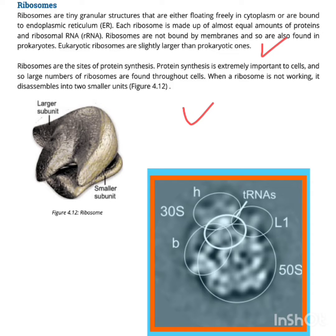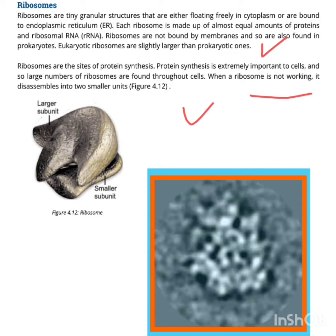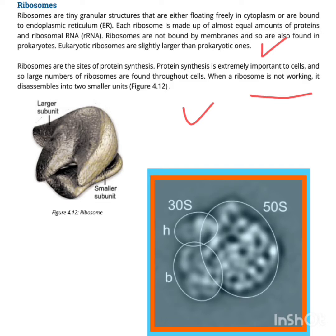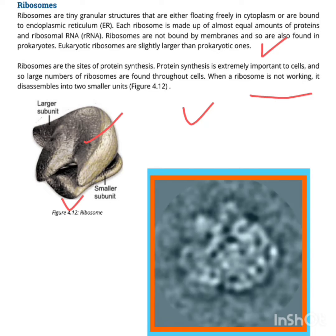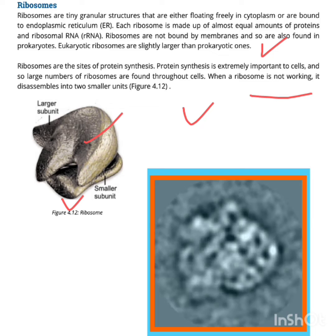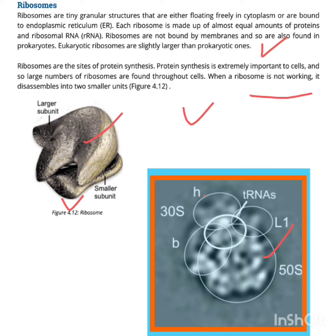When a ribosome is not working, it disassembles into smaller units. The larger subunit is 50S and the smaller one is 30S.